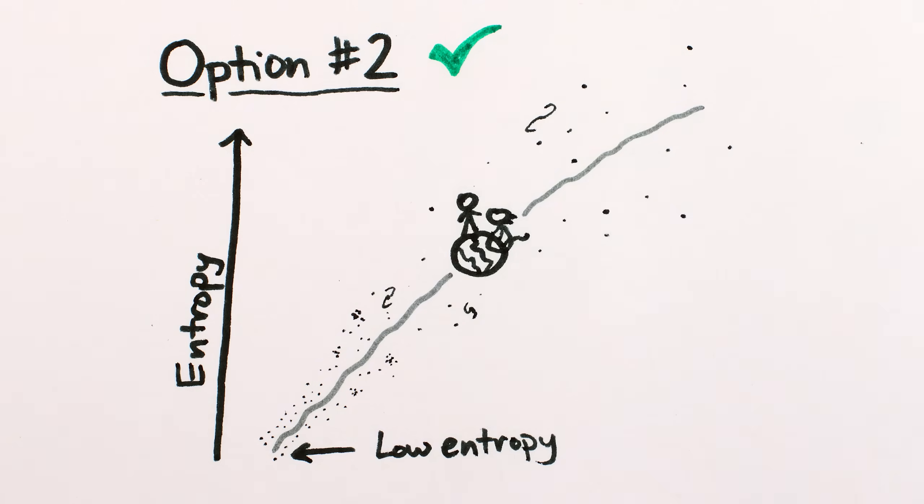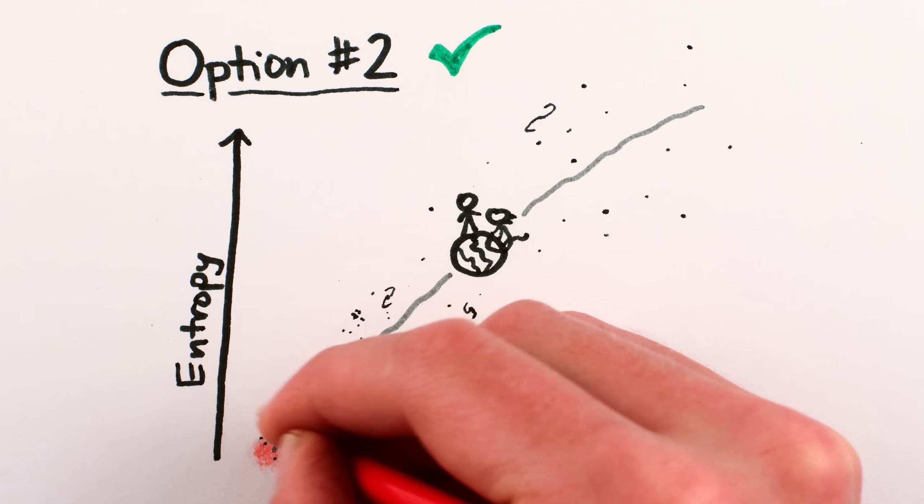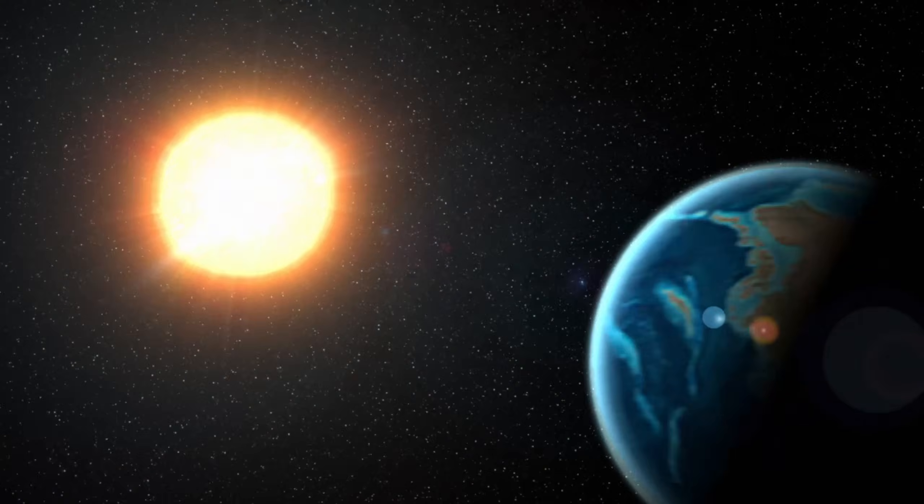Spoiler alert, it's option number two. That low entropy configuration was the Big Bang. 13.8 billion years ago, the universe was hot, dense, smooth, and rapidly expanding.